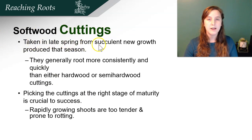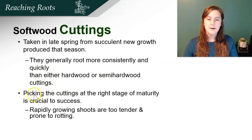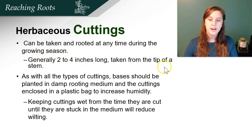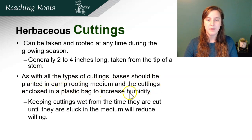Rooting is often more rapid in semi-hardwood cuttings. For softwood cuttings, these should be taken in late spring from succulent new growth produced that season. They generally root more consistently and quicker than either hardwood or semi-hardwood cuttings. Picking the cuttings at the right stage of maturity is crucial to success. Herbaceous cuttings can be taken and rooted anytime during the year — generally two to four inches long taken from the tip of the stem. Bases should be planted in damp rooting media and closed in a plastic bag to increase humidity.